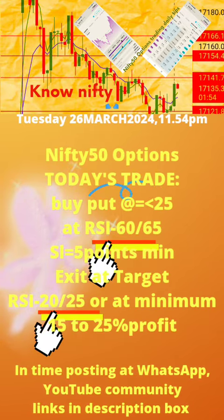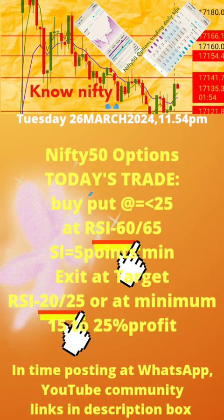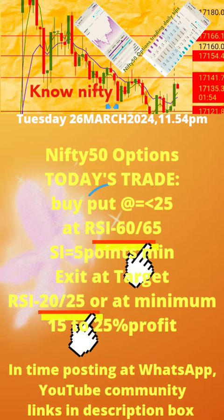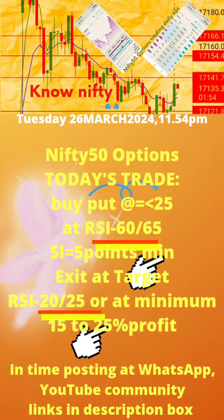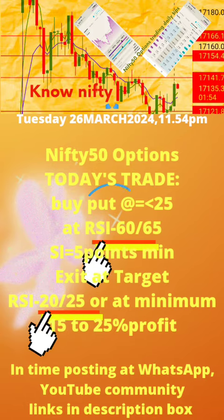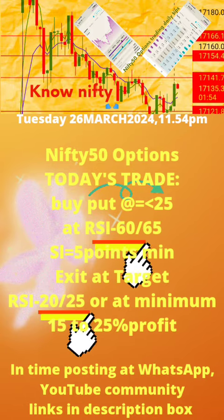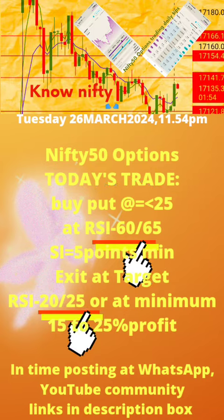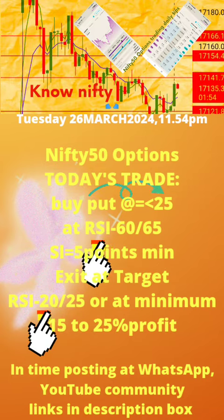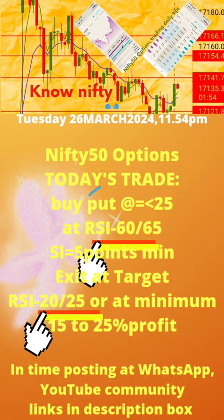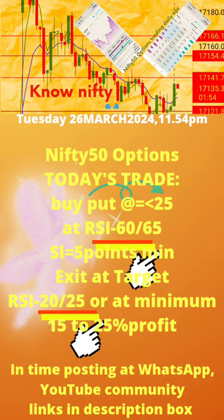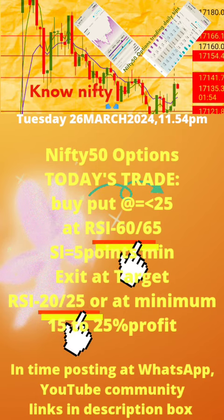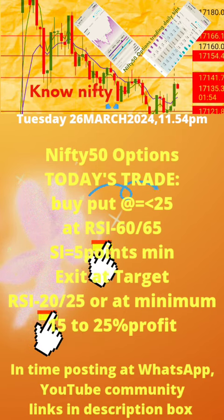Please note: 1. Today's time of post is also mentioned. 2. Buy put or call at the strike price with premium value equal to or less than 25, at the RSI value updated daily. 3. Apply stop loss of minimum 5 points. 4. Exit at target RSI value updated daily. Now take today's trade as per the updates in this page.